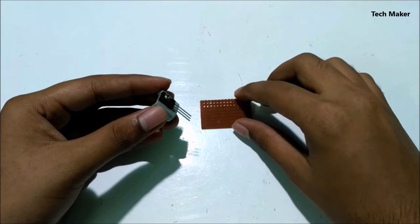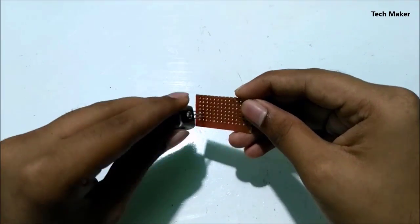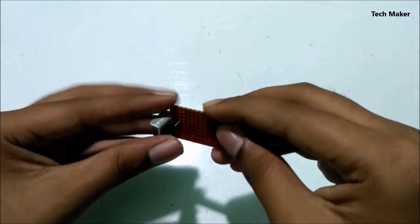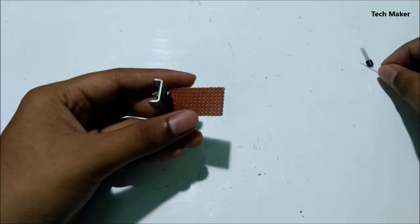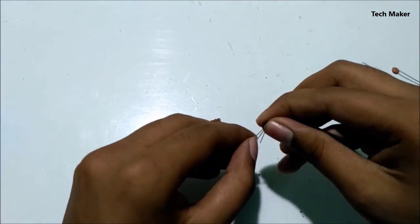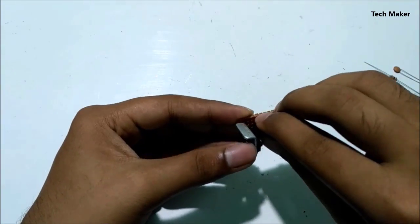Take a PCB and insert it on. Now take the BC547 transistor and take the pin board and insert it on the PCB.